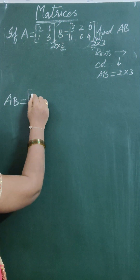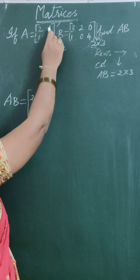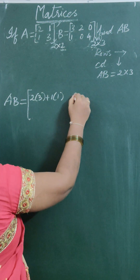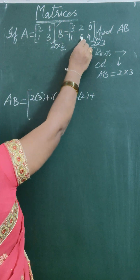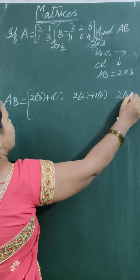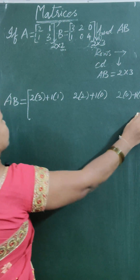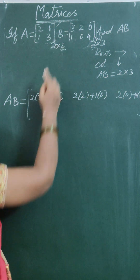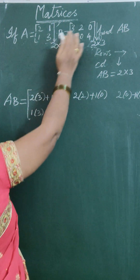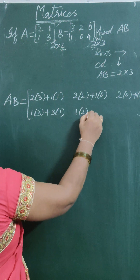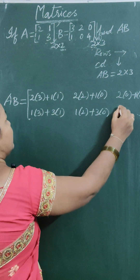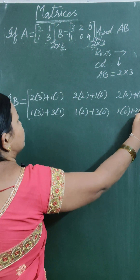First row into first column: 2 into 3 plus 1 into 1. First row second column: 2 into 2 plus 1 into 0. First row third column: 2 into 0 plus 1 into 4. Second row first column: 1 into 3 plus 3 into 1. Second row second column: 1 into 2 plus 3 into 0. Second row third column: 1 into 0 plus 3 into 4.